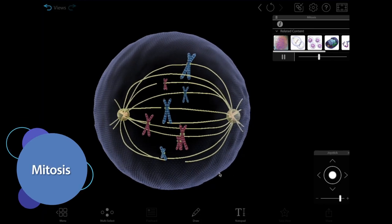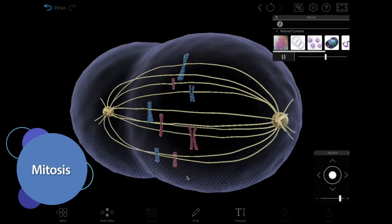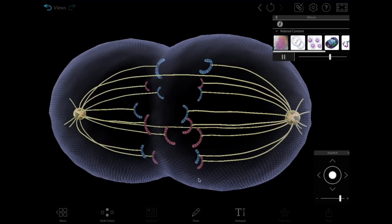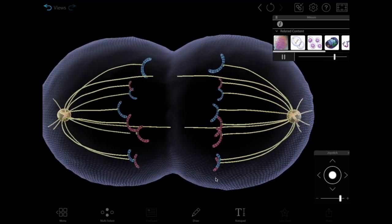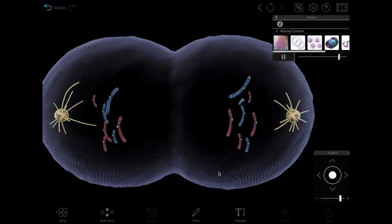Mitosis is how body cells, or somatic cells, replicate themselves. It starts with one diploid cell and ends with two genetically identical diploid daughter cells.